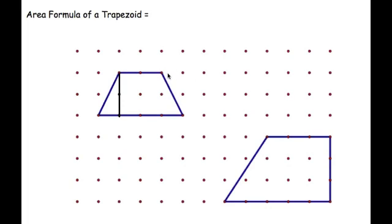So again, we're going to do the area formula for a trapezoid using the area formula of a rectangle, where it's going to be base times height. But this time, we're going to use the median of a trapezoid.